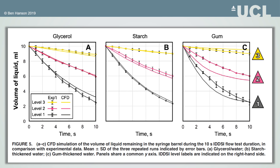When the syringe is full, the maximum pressure is around 0.7 kilopascals, but even this low pressure is enough to cause the liquids to flow quickly. In most cases the simulated flow matched the experiments well, but the largest discrepancy was with gum-based liquids. We thought this could be due to the gum liquids having a significant viscoelastic behaviour, which makes them more cohesive than the others in practice.